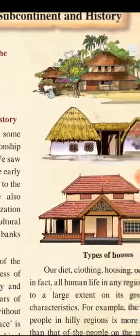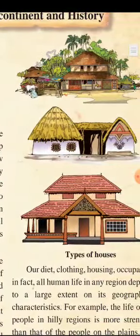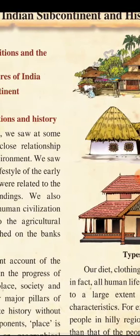Can you see? The types of houses are given here. Why are there different houses? Because they live in different regions. So when people live in different regions, their diet, clothing, and occupation — everything changes. The climate, rainfall, agricultural produce, flora and fauna — everything changes. Flora means plant life, and fauna means animal life.